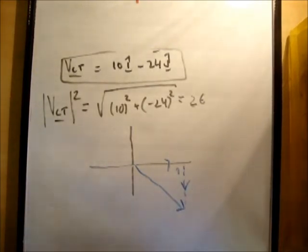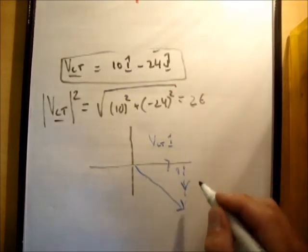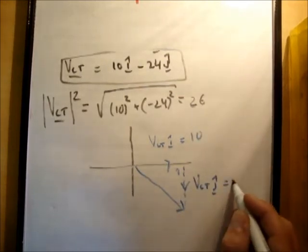The two vectors which when added together create this vector. This is vct i hat, this is vct j hat. That's equal to 10, that's equal to 24.